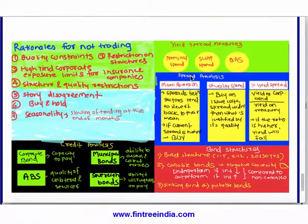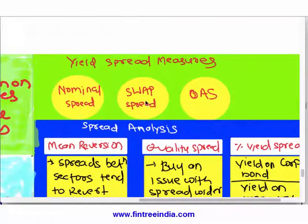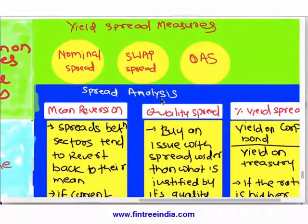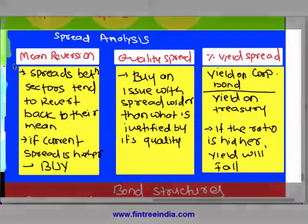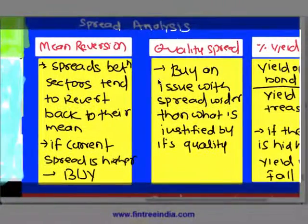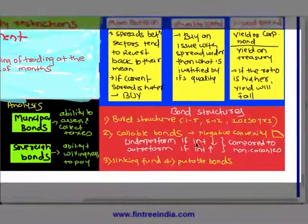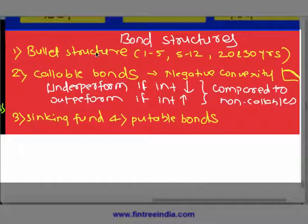The last learning outcome covers different spreads — this is a repetition. Nominal swap spread and spread analysis — we looked at three ratios: mean reversion, quality spread, and percentage yield spread. Quality yield spread means buying an issue with a spread wider than what is justified by its quality.